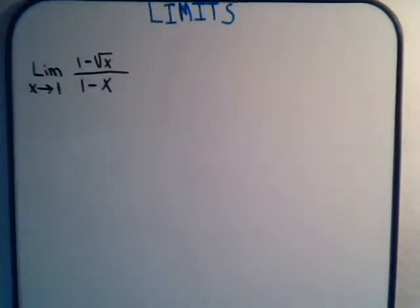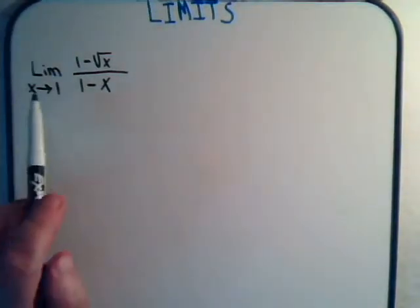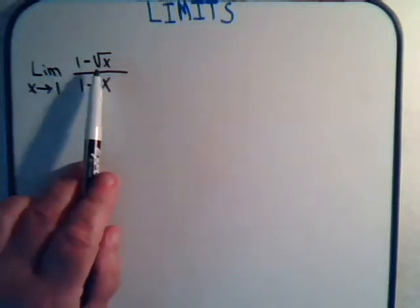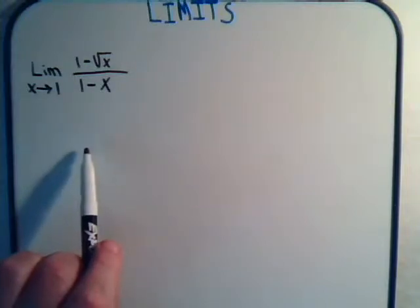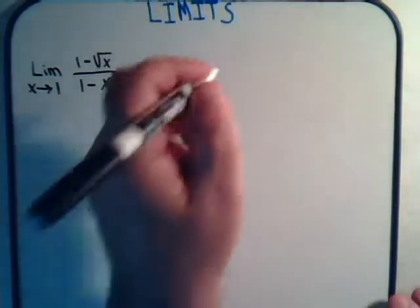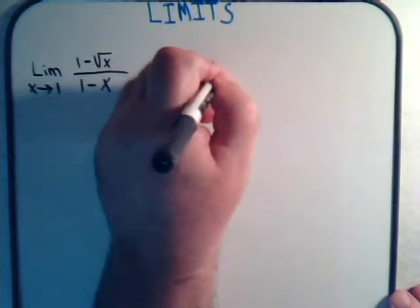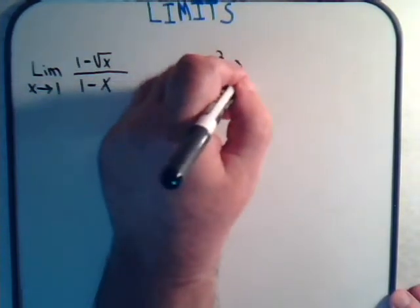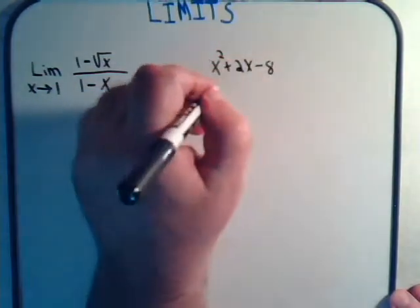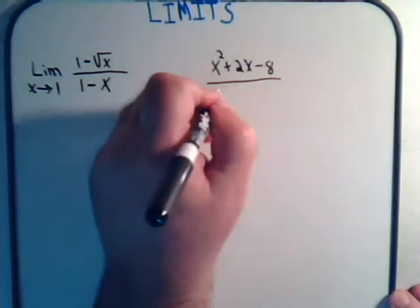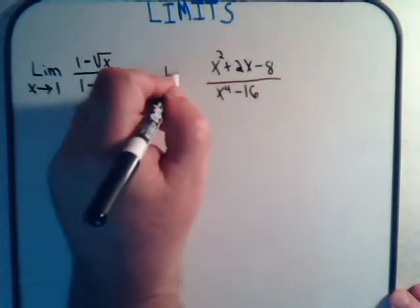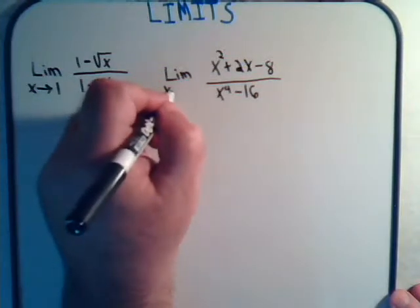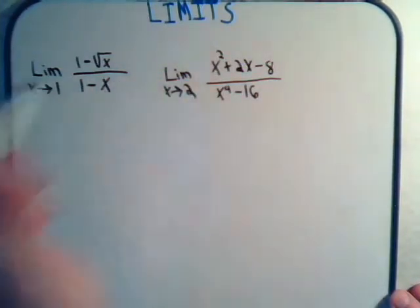In this video we have two problems left from our previous series. The first is the expression 1 minus the square root of x divided by 1 minus x, and we want to take the limit as x approaches 1. The second problem is x squared plus 2x minus 8 divided by x to the 4th minus 16, and we want to take the limit as x approaches 2.